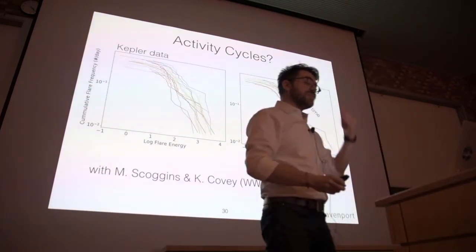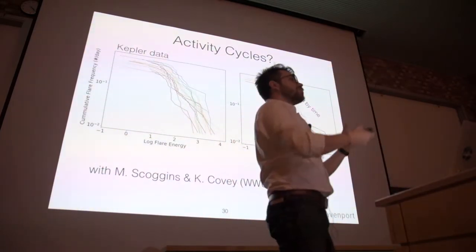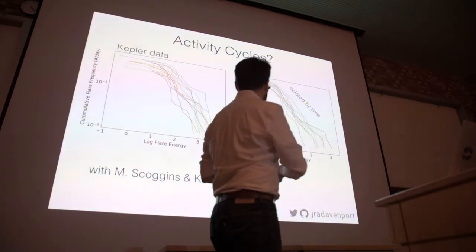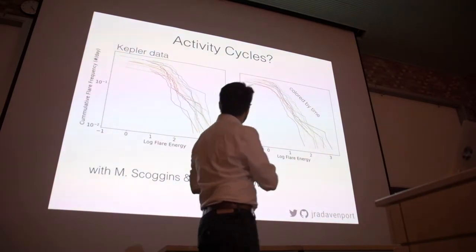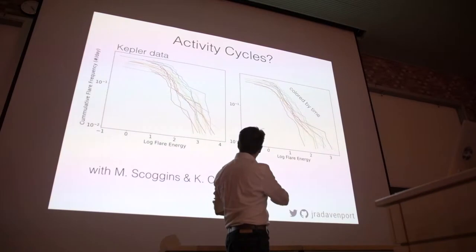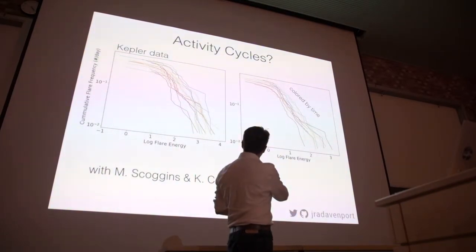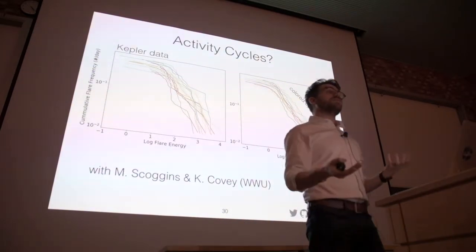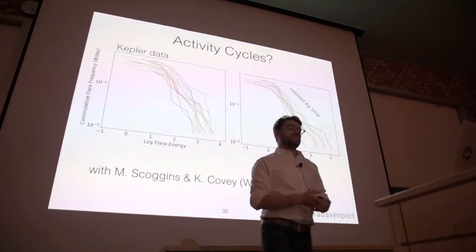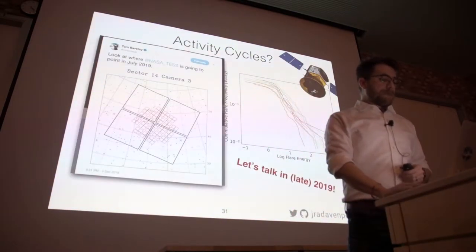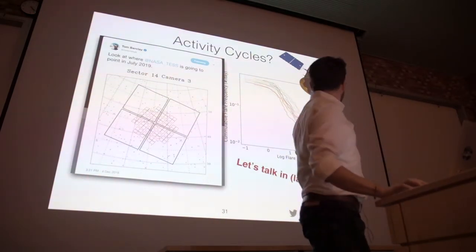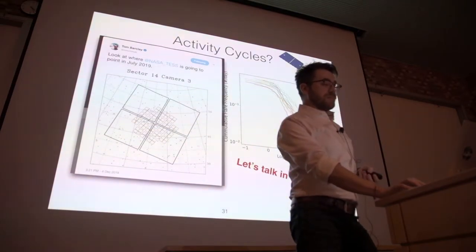If you can measure the specific flare rate within a year, we should be able to actually constrain activity cycles for stars just by counting the number of flares as a function of time. Here's just two candidates that he's pulled out. These are two candidates who have colored the flare frequency distribution by time.